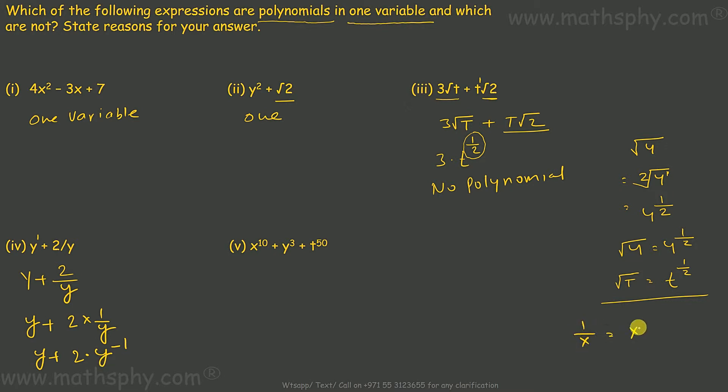This we learn in number systems: anything like 1/x can be x to the power minus 1, 1/y can be y to the power minus 1. So 1/y will be y raised to negative 1. Now negative 1 is an integer, but a negative integer. But in case of polynomial, we need to have positive integer, so this expression is not a polynomial.